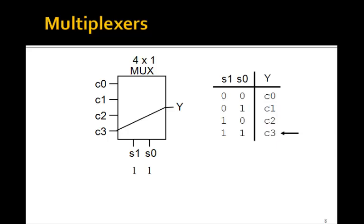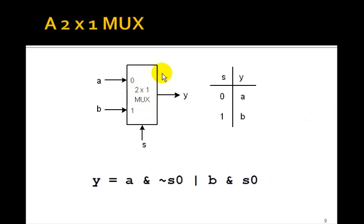Now, it turns out we can make this 4 to 1 mux out of 2 to 1 muxes. Let's see how we can do that. Remember, this was the logic equation we had for a 2 to 1 mux. We got it from the Carnot map, but you can really see it from this truth table.